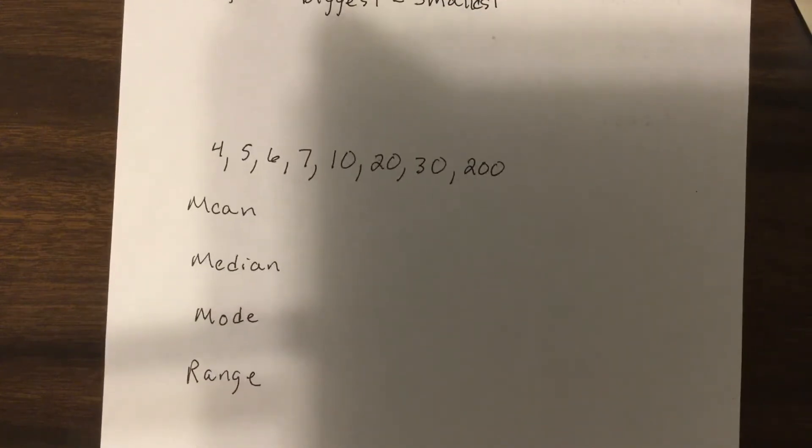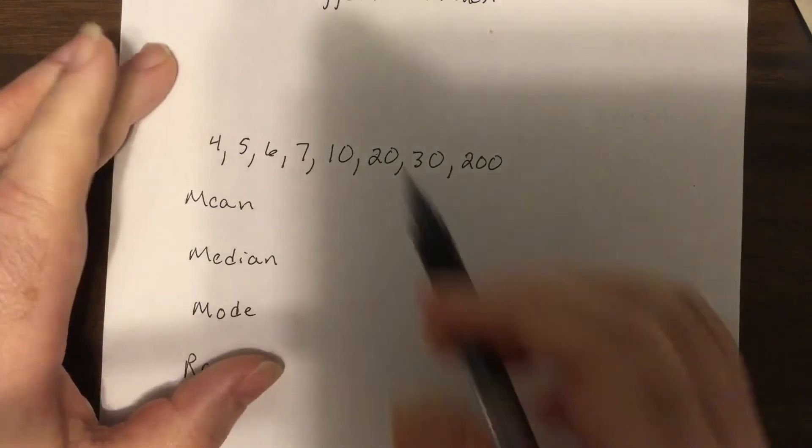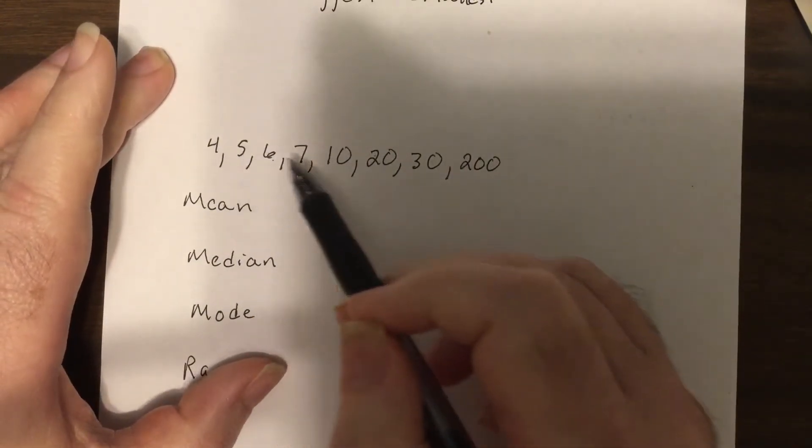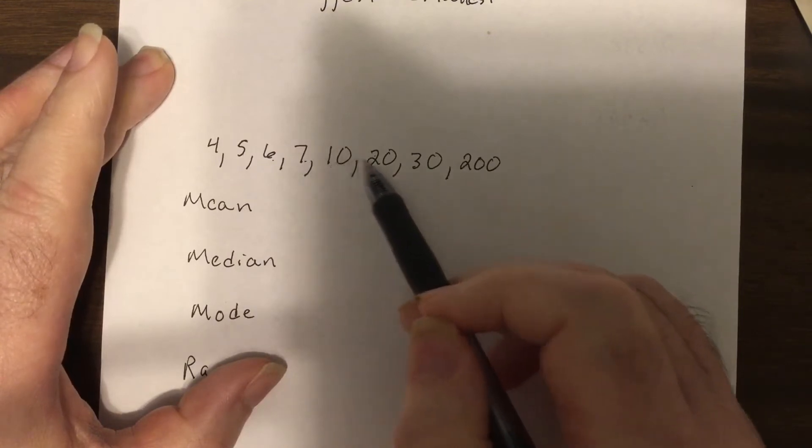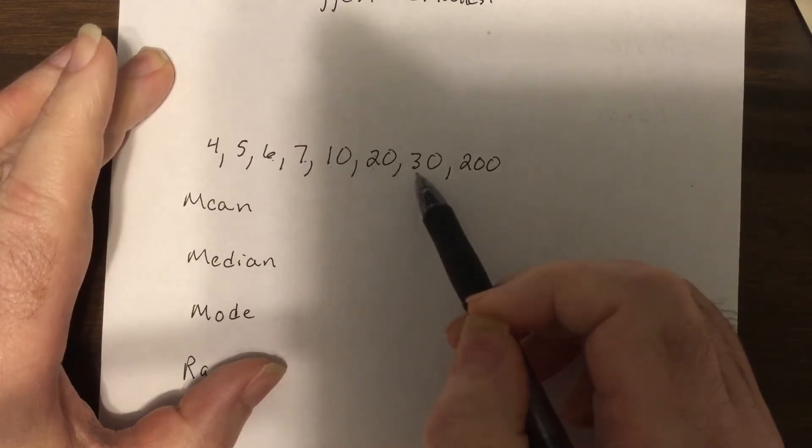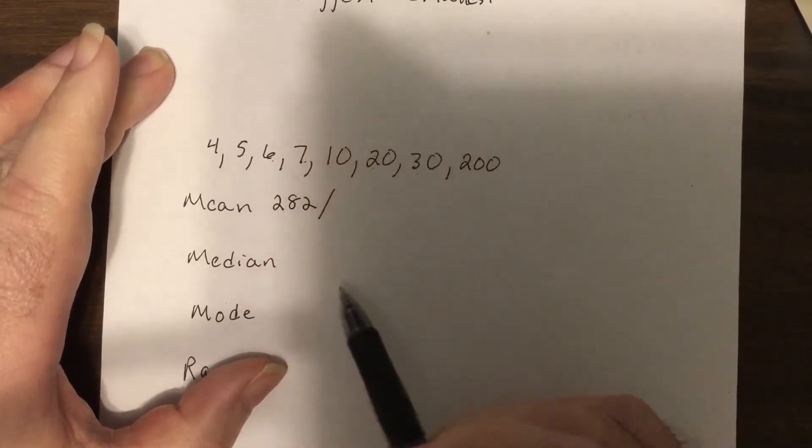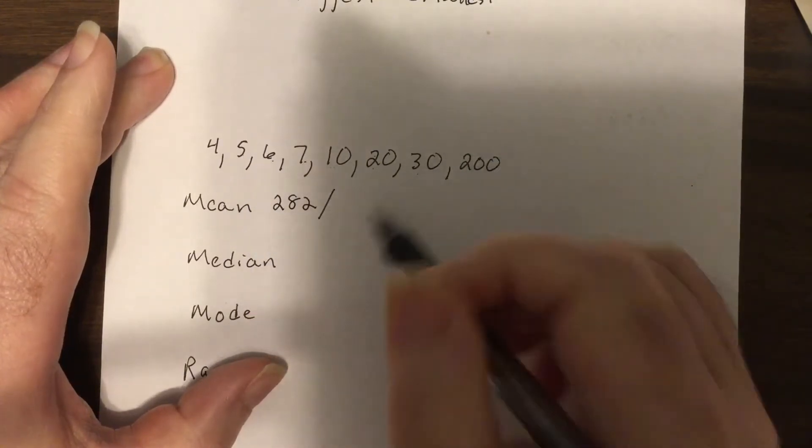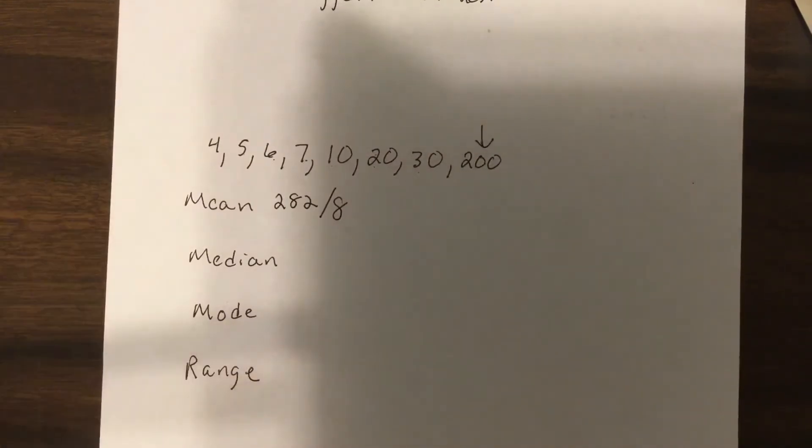So here's the mean. We would add up the numbers. So 4 and 6 is 10, plus 5 is 15, plus 7 is 22, plus 10 is 32, 52, 82, and then 200 is 282.